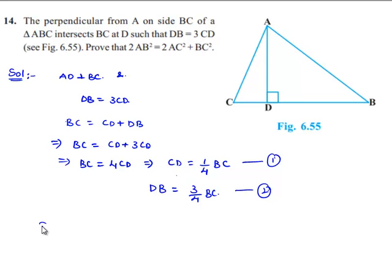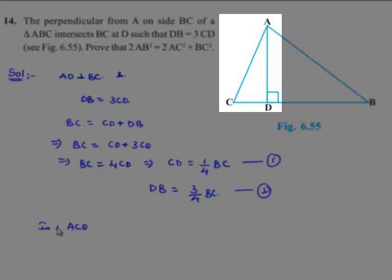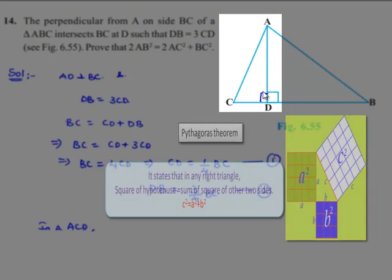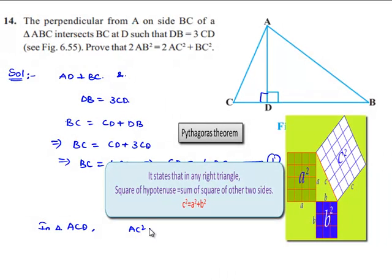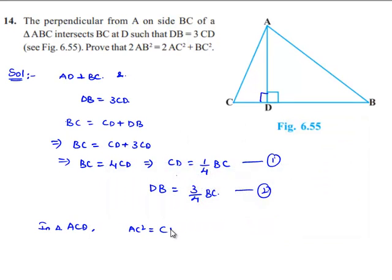Now in triangle ACD, let us apply the Pythagorean theorem as angle ADC is equal to 90 degrees. That is, hypotenuse square is equal to sum of square of other two sides, that is CD square plus AD square.